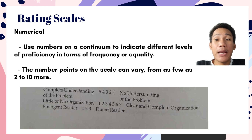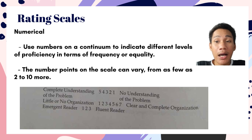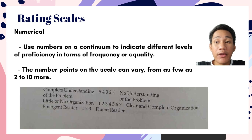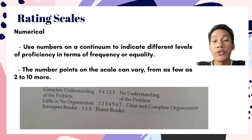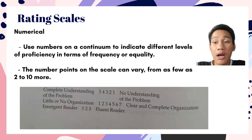Next is the numerical rating scale. A numerical rating scale uses numbers on a continuum to indicate different levels of proficiency in terms of frequency or quality. The number of points on the scale can vary from as few as 2 points to 10 points or more, and the number of points is determined on the basis of the decision that will be made. For example, complete understanding of the problem is the highest point at 5, and the lowest point is 1, which is no understanding of the problem.